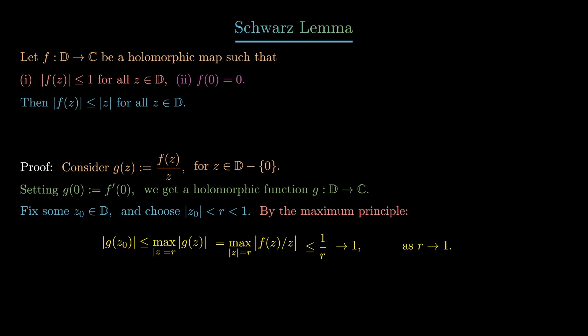That tells us therefore that the absolute value of g(z0) is less than or equal to 1, and in particular f(z0) is less than or equal to z0 in absolute value.